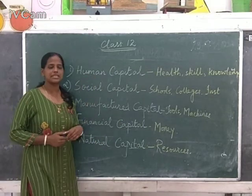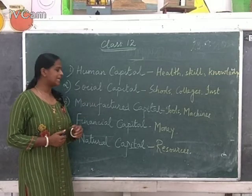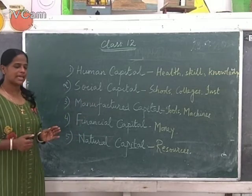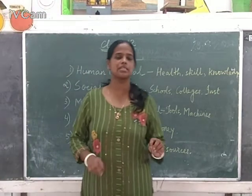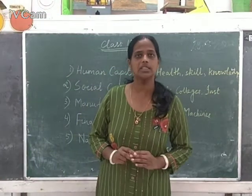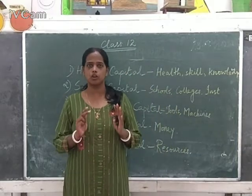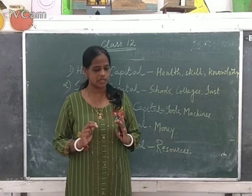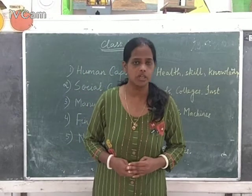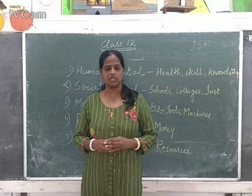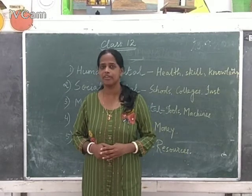The five types are: human capital, social capital, manufactured capital, financial capital, and the most important — natural capital. We will discuss natural capital in the end. First, for the objective category, I will tell you the meaning of the first four types. Capital is wealth or asset which is used to make life comfortable.